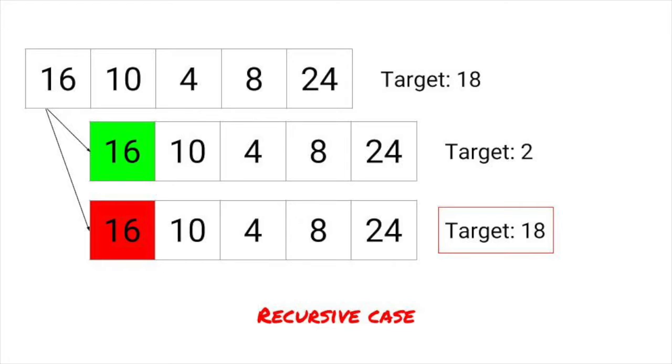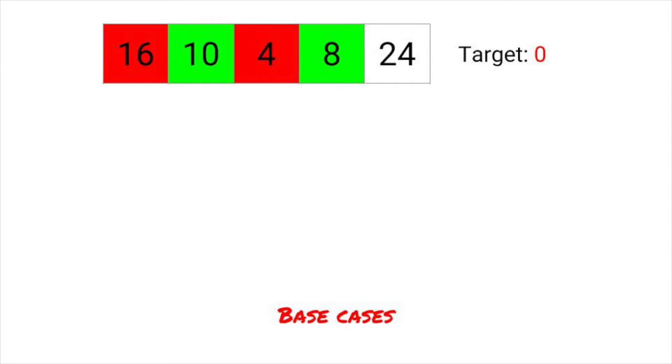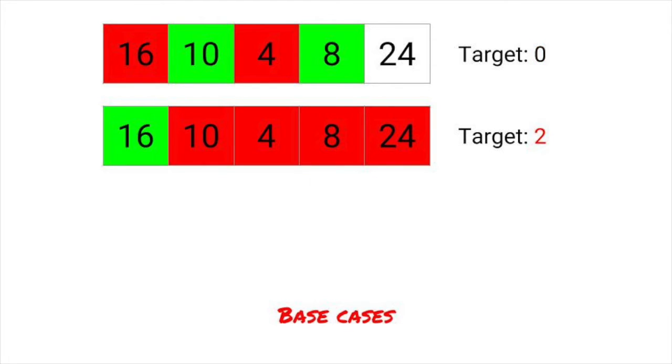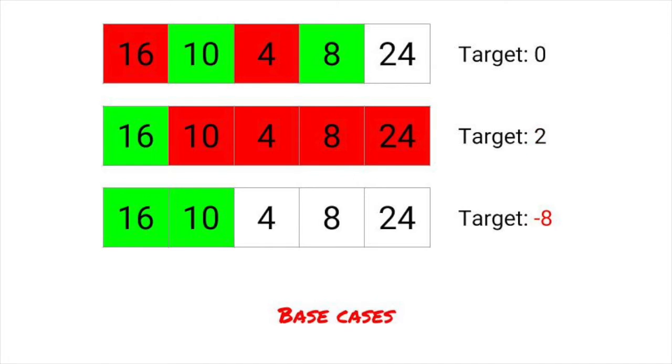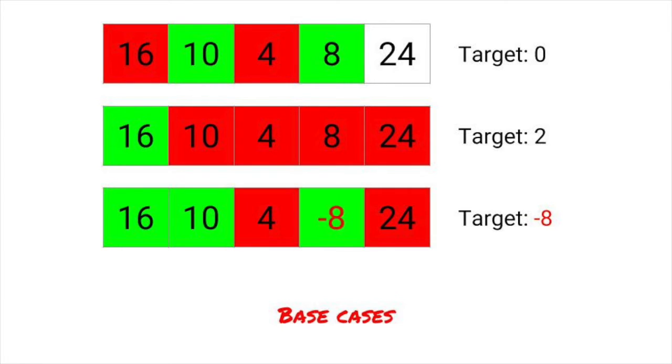So then, what is our base case? There are some trivial problems we can solve as our base cases. First, if our target is ever 0, then we've found an answer. We just don't use any of the other items and we can return true. Second, if our list is used up and our target isn't 0, then we can't reach our target and we can return false. Also, if we know all of the numbers are positive, if our target is ever below 0, we can also return false. If negative numbers are allowed though, we can't do this.